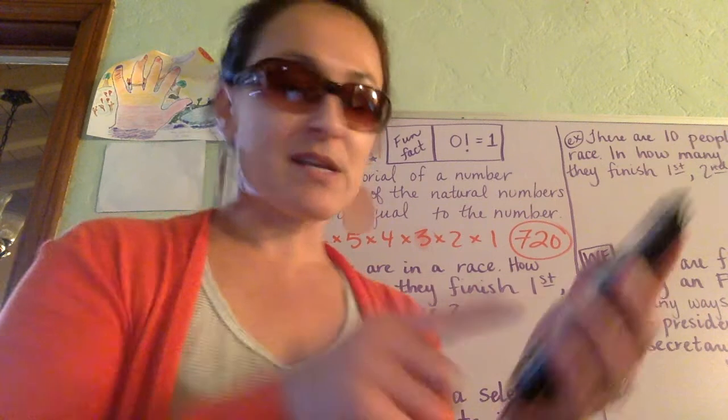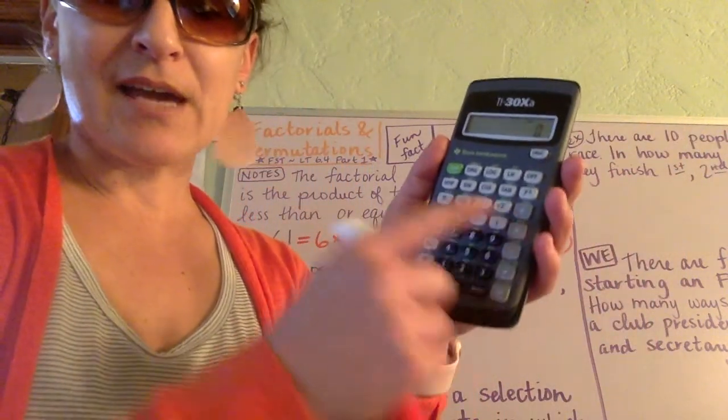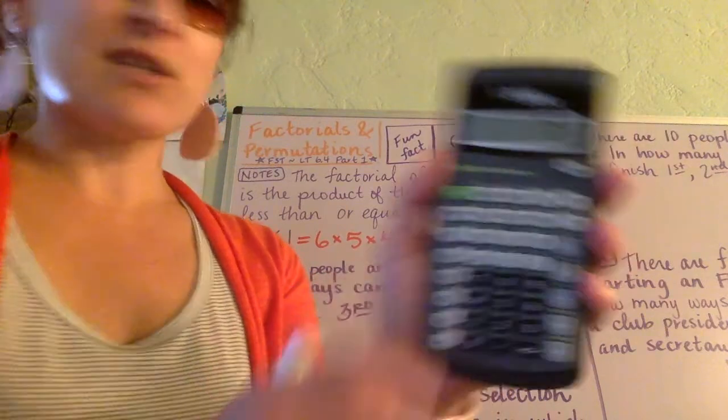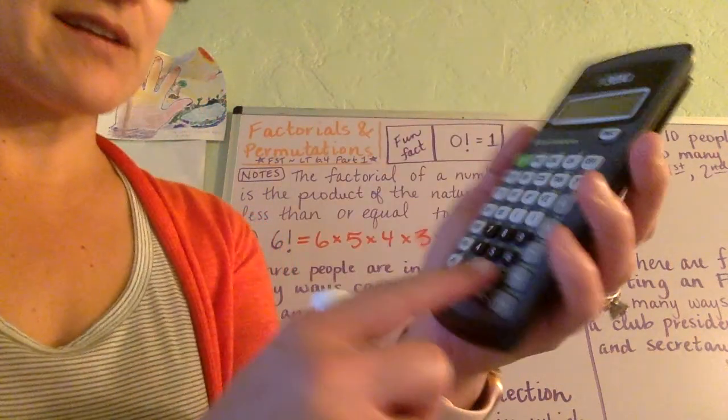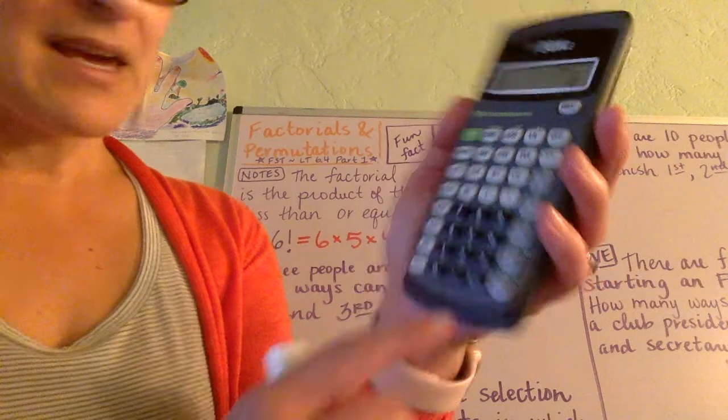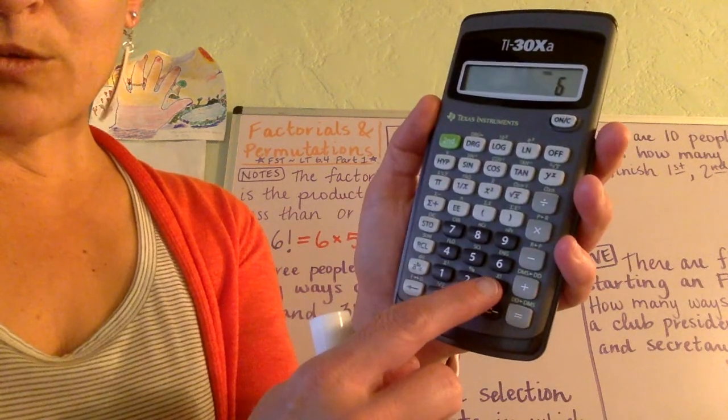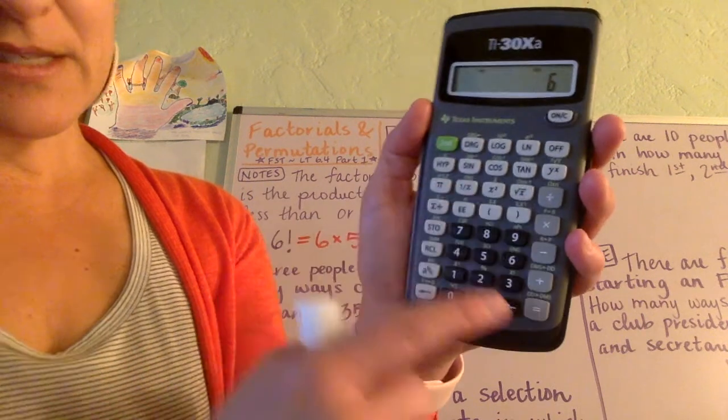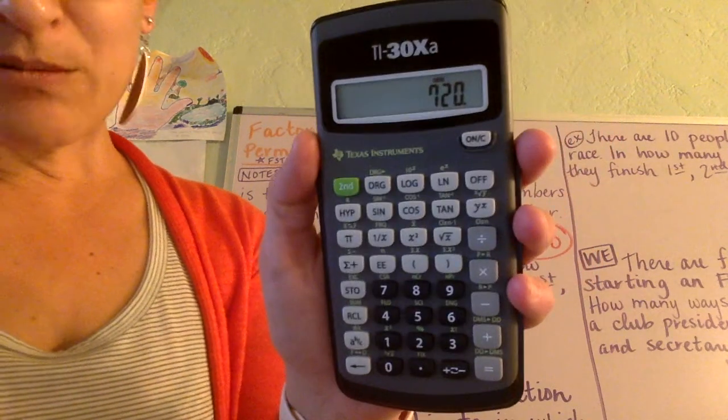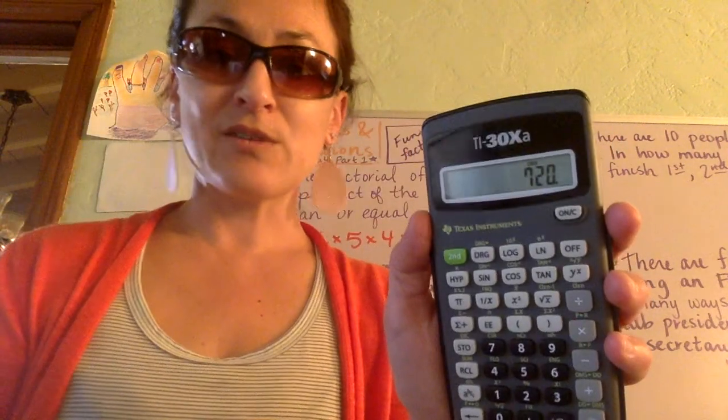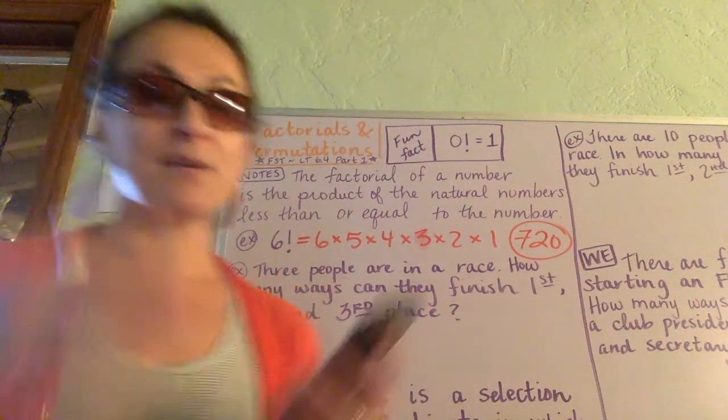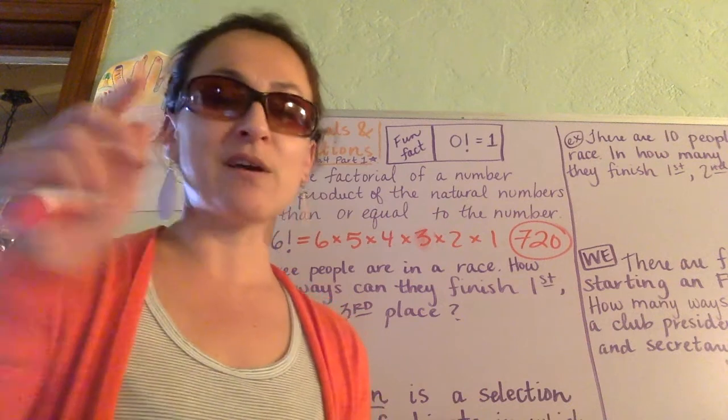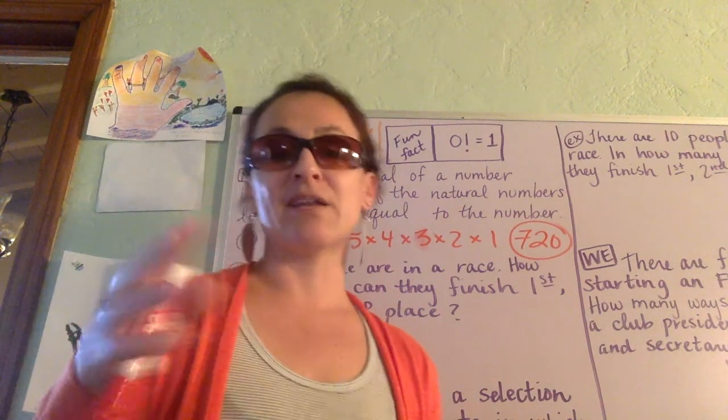If I wanted to type this out, instead of having to go 6 times 5 times 4 times 3 times 2 times 1, I can actually, on my handy-dandy calculator here, just type in 6. And then to get to that factorial button—see how it's above the 3?—I have to go 2nd and then hit that, and it will tell me that it is, in fact, 720. Save some time. And that's very helpful if we did a bigger factorial, like 12 factorial.